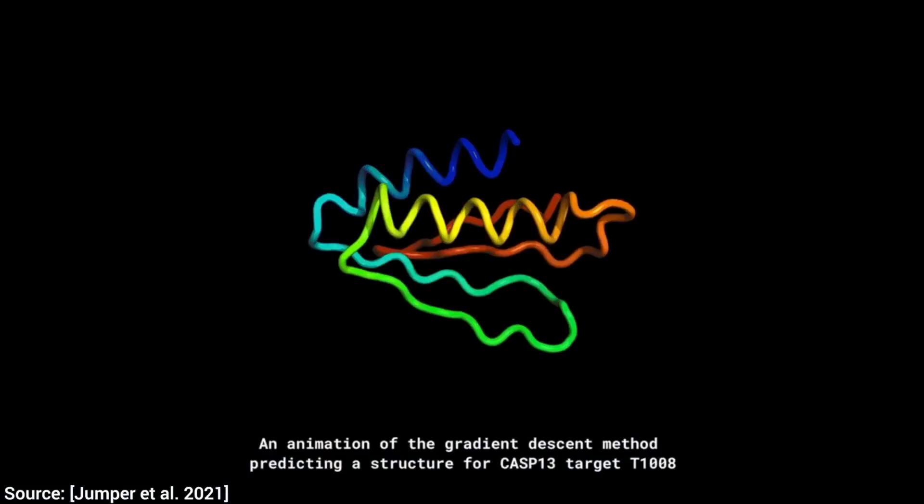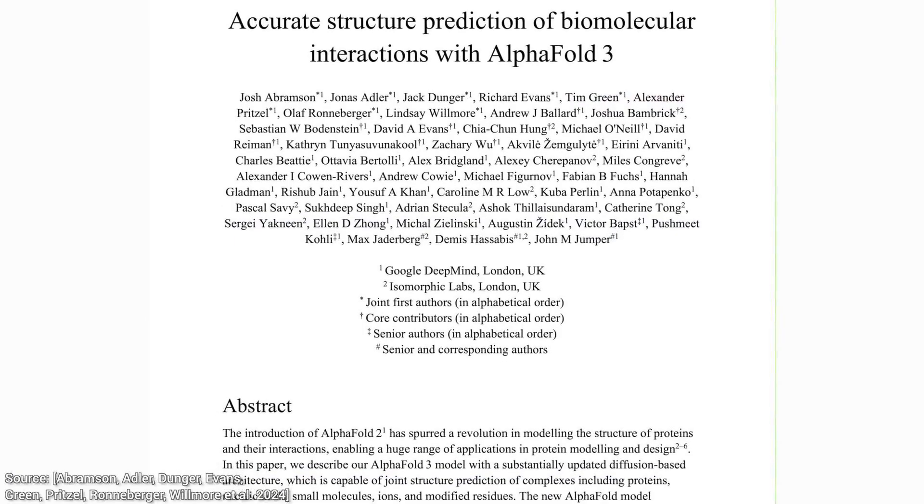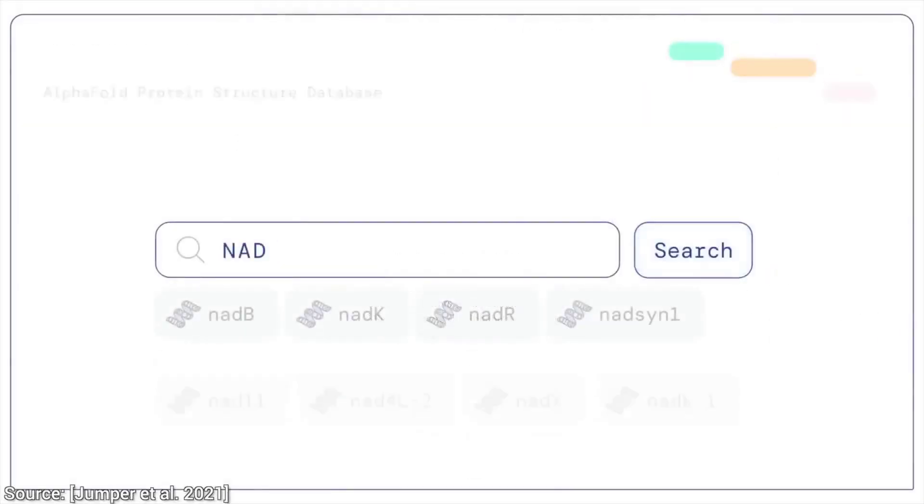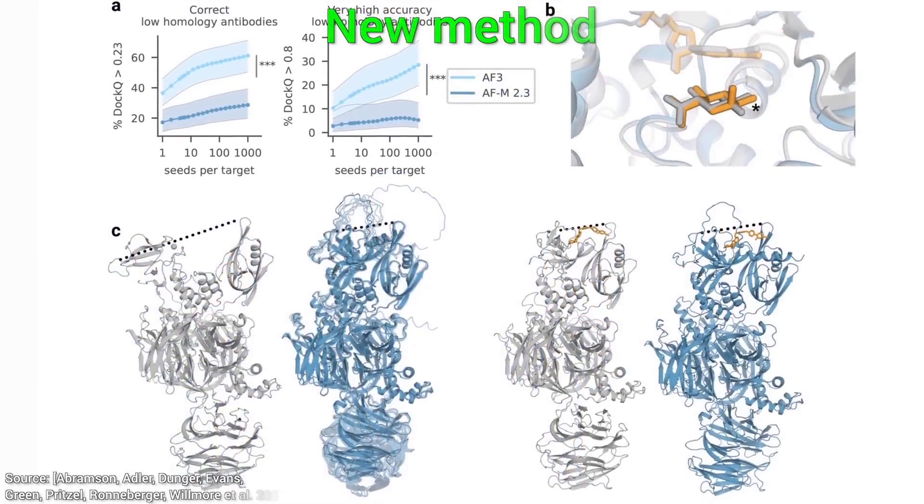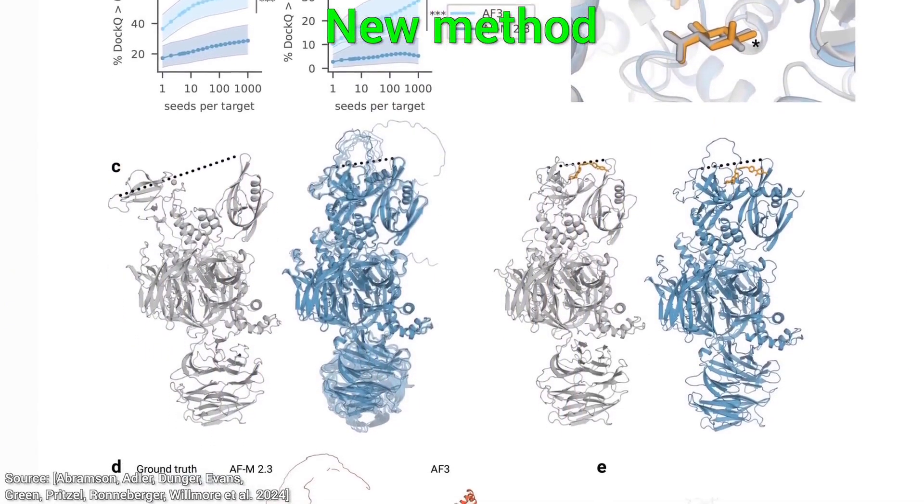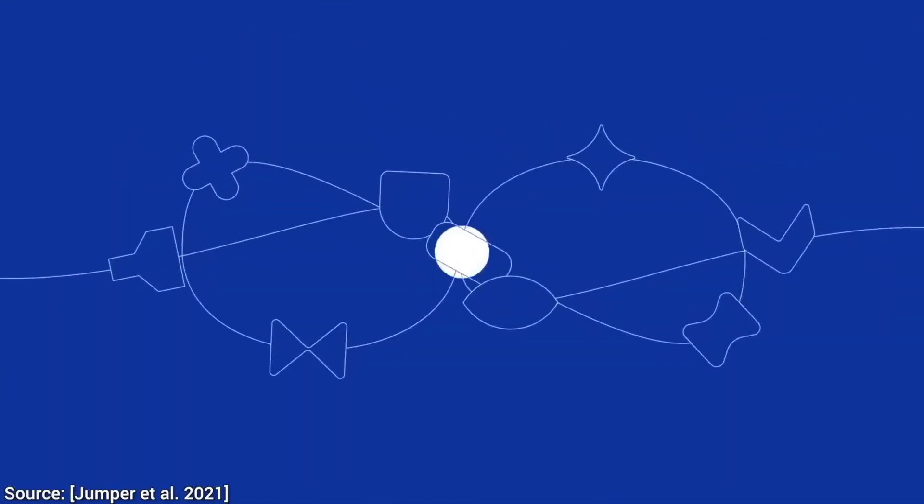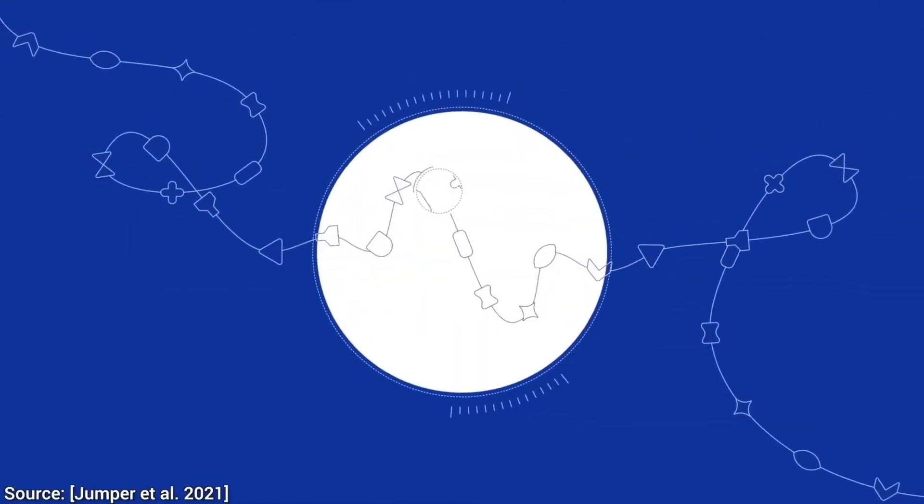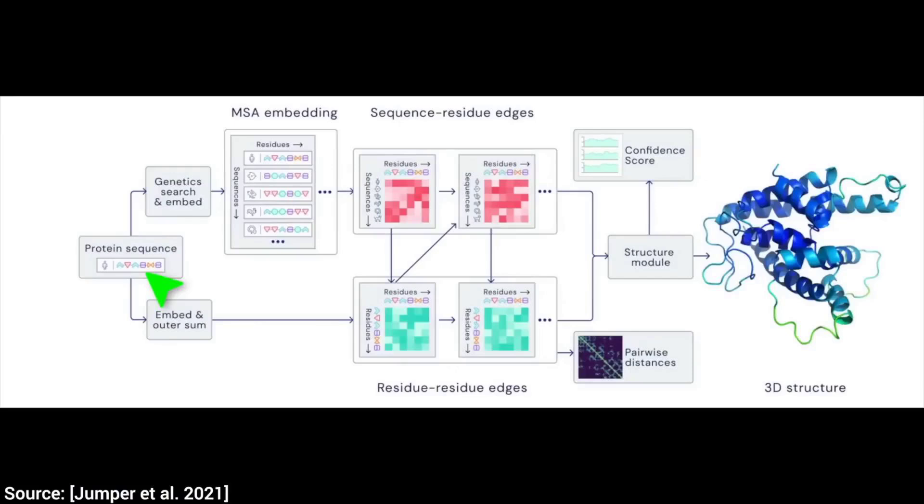DeepMind extended the model's scope beyond proteins. It can now predict interactions between proteins and nucleic acids, small molecules, ions, and more. This opens the door to computationally guided drug discovery and systems-level biology. Unlike rigid body docking, AlphaFold3 infers co-folding dynamics, capturing conformational changes on binding. It's not just a structural oracle. It simulates the conditional behavior of molecular systems. This is a paradigm shift toward modeling functional biology from first principles.